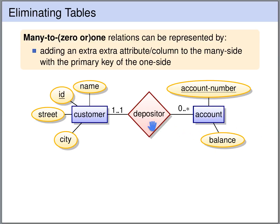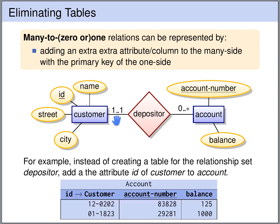If we have a relationship set that is many to one, then we do not need an extra table for this relationship set. We can encode this relation by adding an extra attribute to the many side of the relation, in this case the account entity set. This extra attribute will hold a foreign key referencing the one side of the relation. So id is a foreign key referencing the customer table.